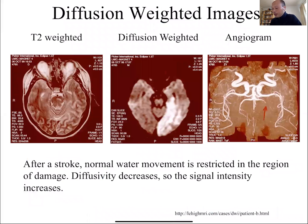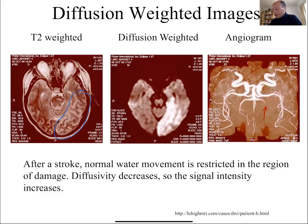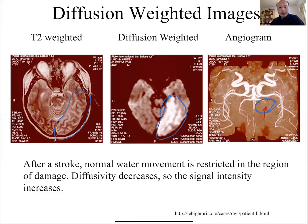Here's another example: a T2-weighted image where you could say there's something different between the left and right side, but it might be hard to say what's wrong. With a diffusion-weighted image, it's very clear there's an area with altered diffusivity. If you also had an angiogram showing blood flow, that would confirm the blood supply to that area had been decreased — there was some blockage in the vessel.